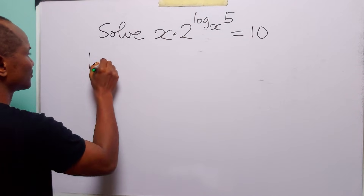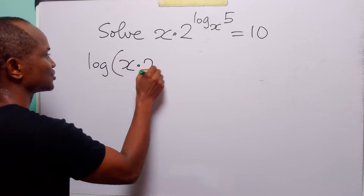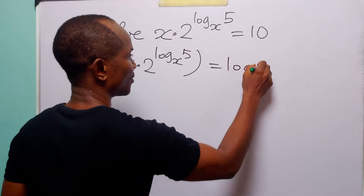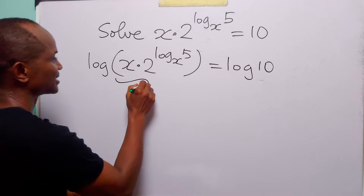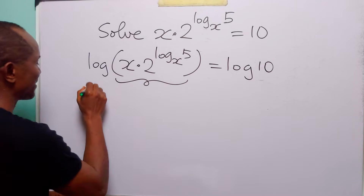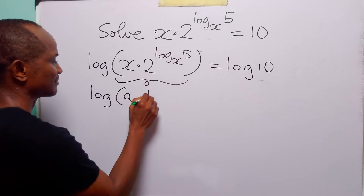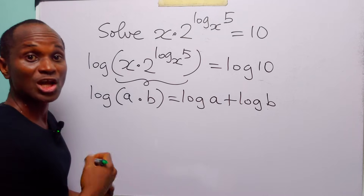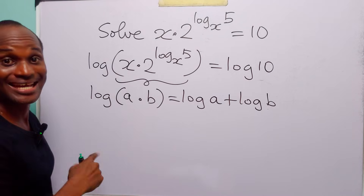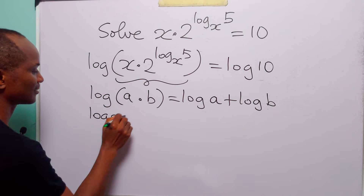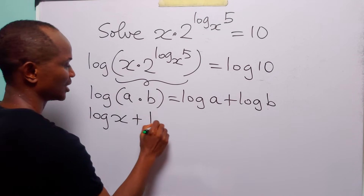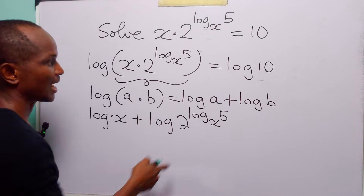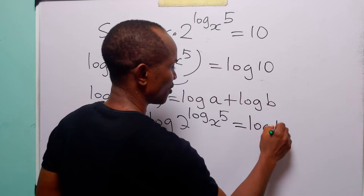Now when we do this, we have log x times 2 to the power log base x of 5, is equal to log 10. Now you can see that this is a product. Remember that log(a times b) is equal to log a plus log b. So we can write the left-hand side as log x plus log 2 to the power log base x of 5, and this is equal to log 10.